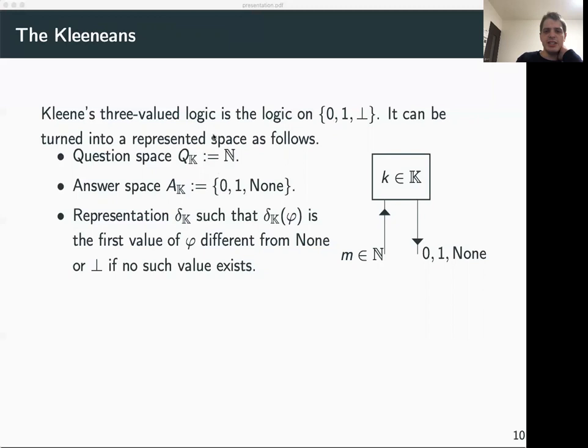The questions are again the natural numbers, and as answers we use zero, one, and a third element none. We define the representation as follows: a name is a function from the natural numbers to {zero, one, none}. We say it's a name for zero if the first element different from none that this function returns is zero; a name for one if the first element it returns is one; and a name for bottom if this function only returns none.